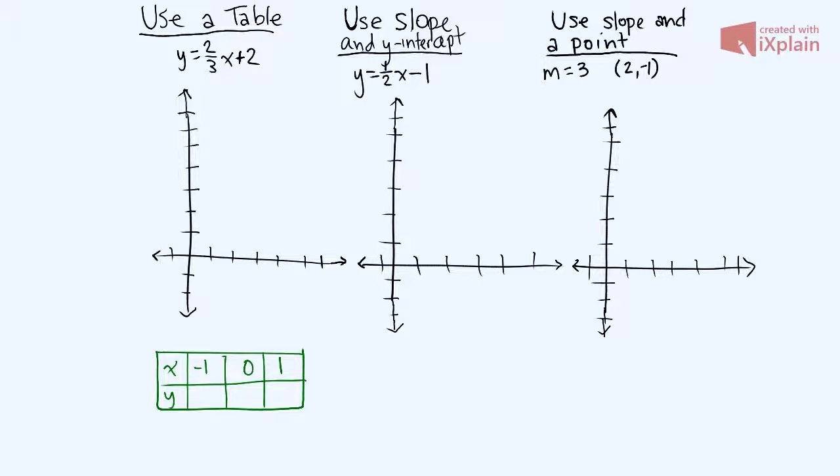So we start by plugging in negative 1. So we can say y equals two-thirds times negative 1 plus 2. Well, two-thirds times negative 1 is negative two-thirds plus 2. And then negative two-thirds plus 2 is positive 1 and one-third. So we can say that this is 1 and one-third.